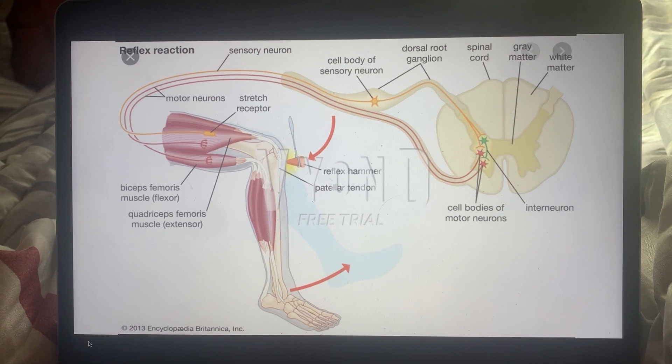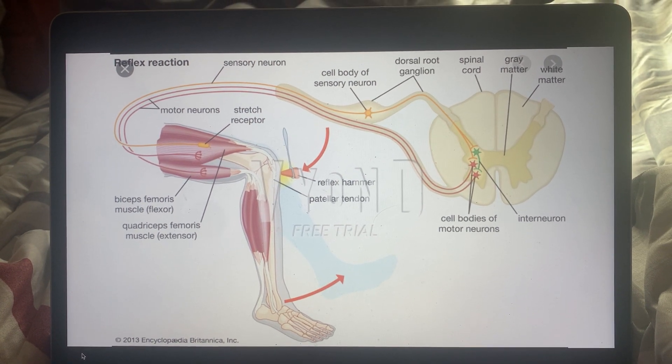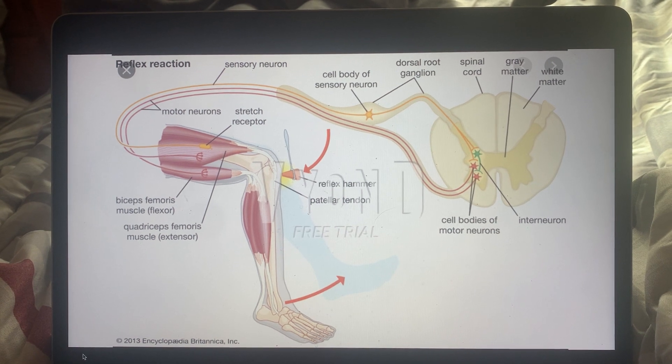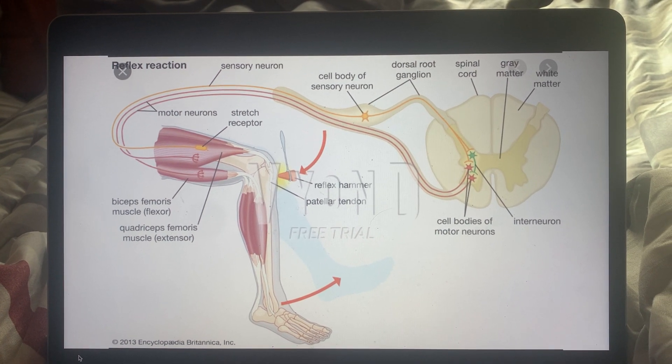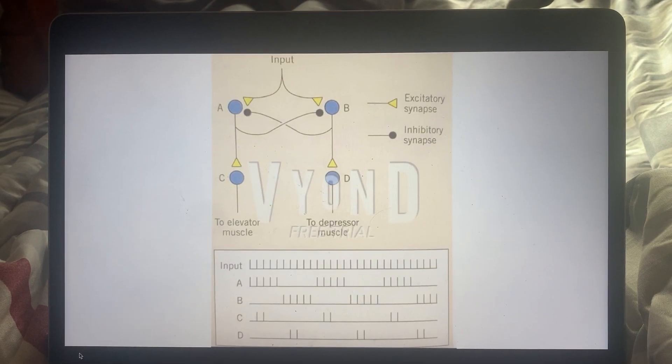Now, vice versa, if the patellar reflex is not activated and the knee is bent, the quadriceps muscle will be inhibited from being constricted and the hamstring muscle will be able to constrict. So now how this pertains to this current system with the Drosophila flies.